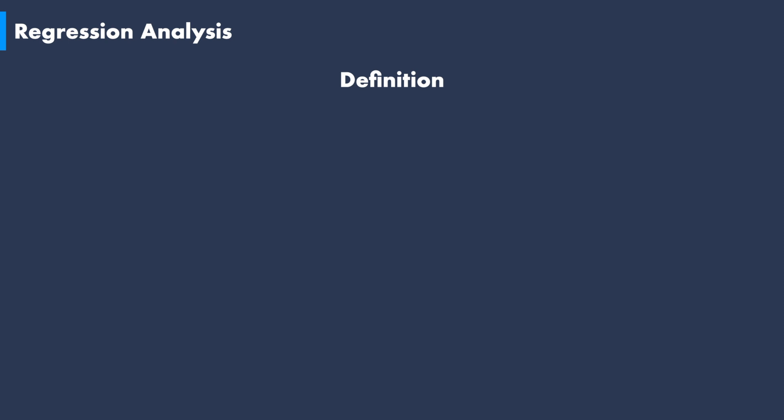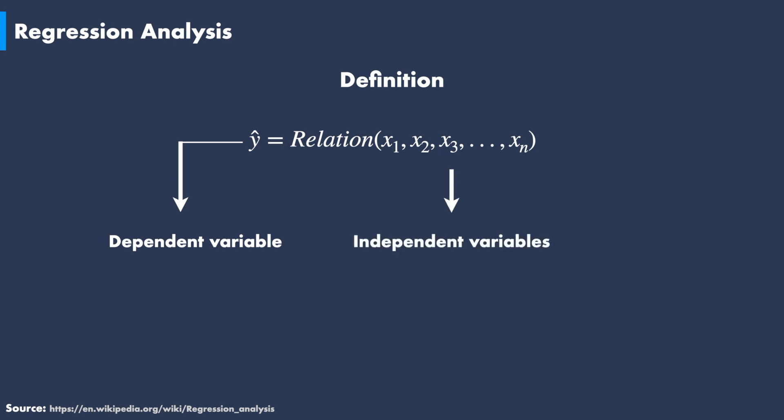What is regression analysis? In broad terms, regression analysis is a process for estimating the relationships between a dependent variable—in our case, the label or the outcome—and one or more independent variables, in this case, the input data or the features.